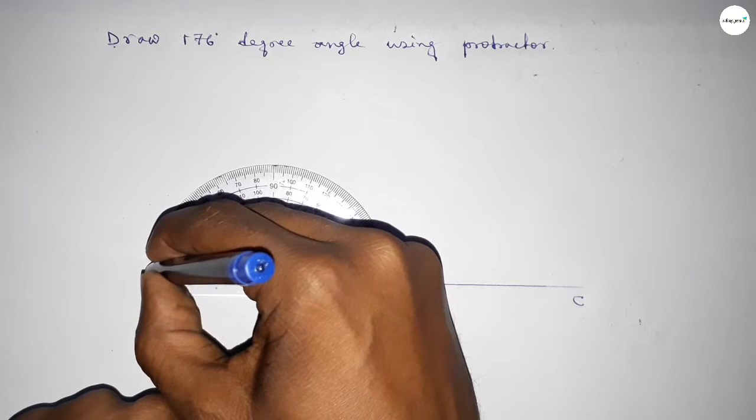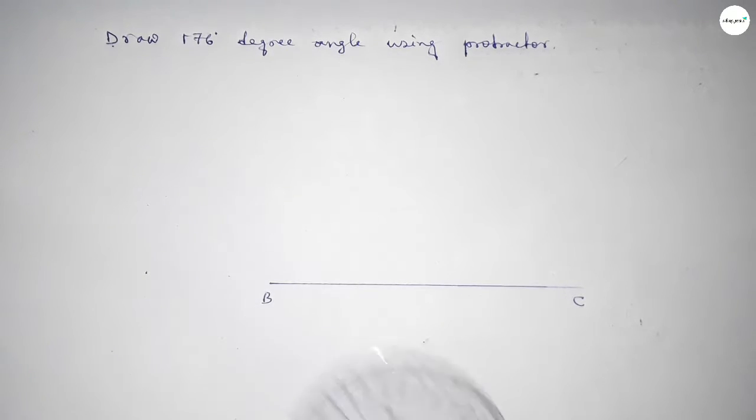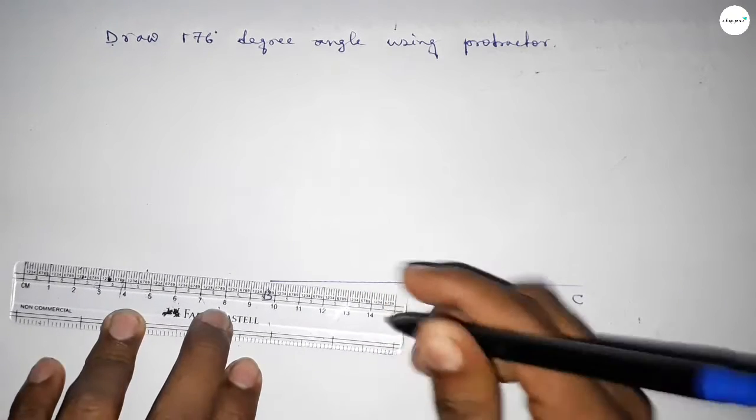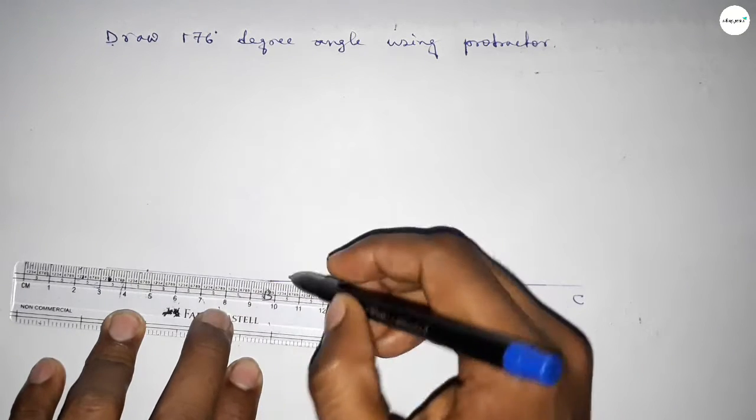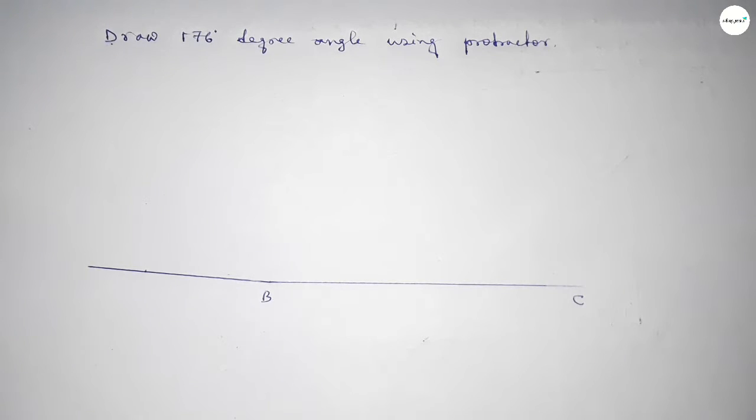So now we have to join this to get a 176-degree angle. Joining this side and taking here point A.